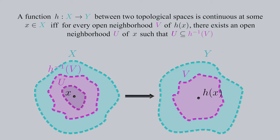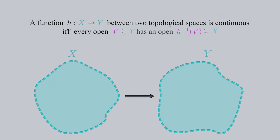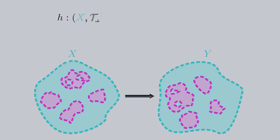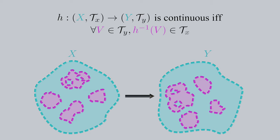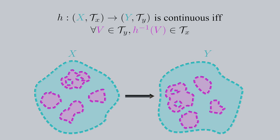Looking back at our definition of continuity at a point: if there exists an open ball around each element in the preimage completely contained in the preimage, then there's surely an open ball around x completely contained in the preimage, and this qualifies as one of these U neighborhoods. Hence, all we need to do is show that the preimage of each V of h(x) is open, because open sets are generally equal to unions of basis elements. We can say a function is continuous at all points of the domain if and only if every open subset V of Y has an open preimage that's a subset of X. More precisely: h from (X, tau_X) to (Y, tau_Y) is continuous if, for all V in tau_Y, the preimage of V is in tau_X.